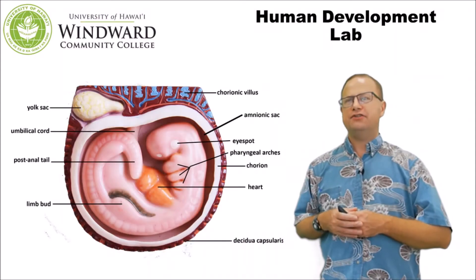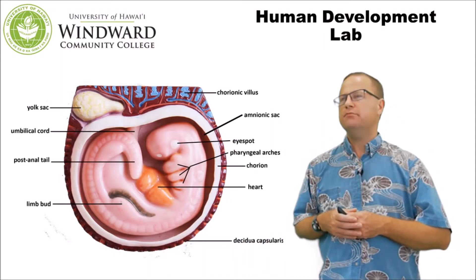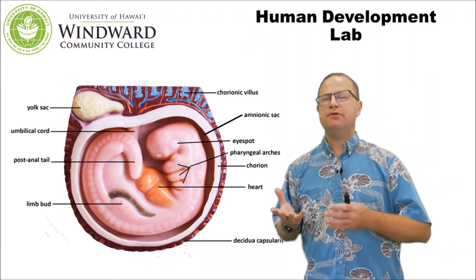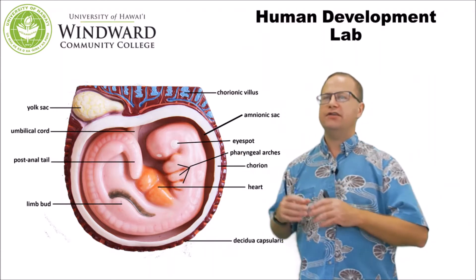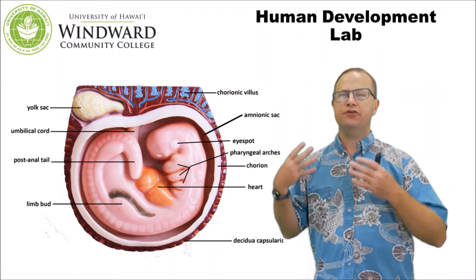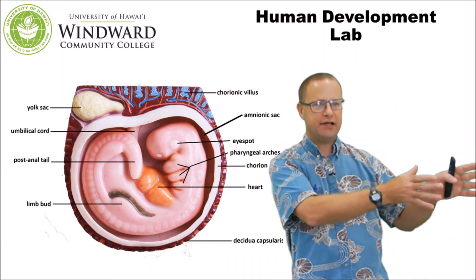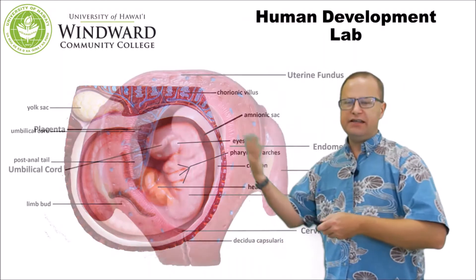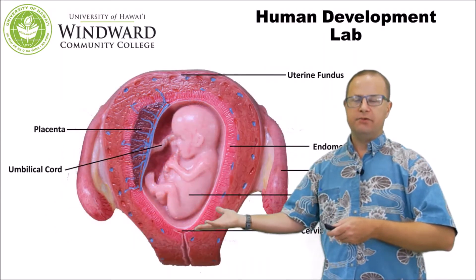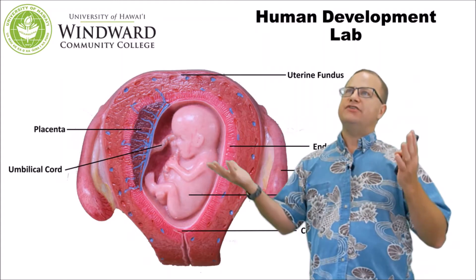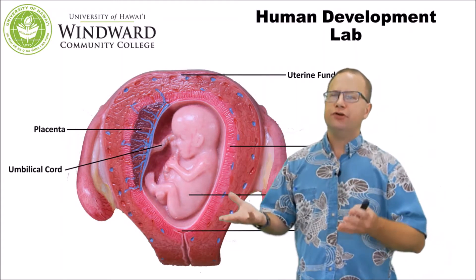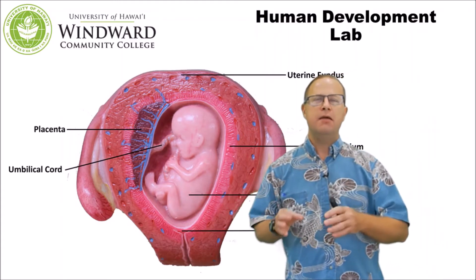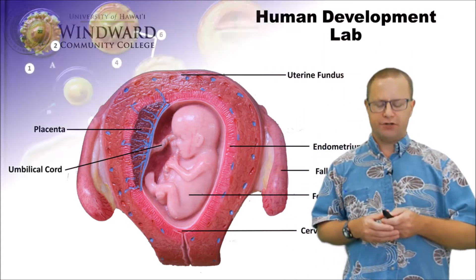Hello, anatomy and physiology lab geeks. Welcome to your developmental biology laboratory. In this laboratory, we're going to go through the anatomical changes that happen during human development, starting with a fertilized egg or zygote, going through the embryonic period, and then ending up here in the fetal period. It's going to be about a 280-day journey, and a lot of that time we're going to spend in the embryonic period, because that's when the most profound changes occur.